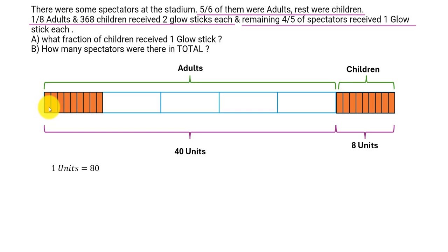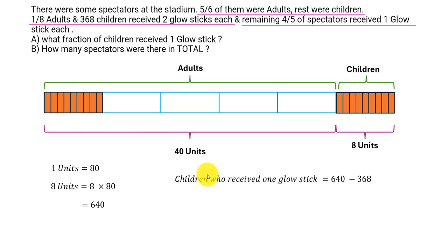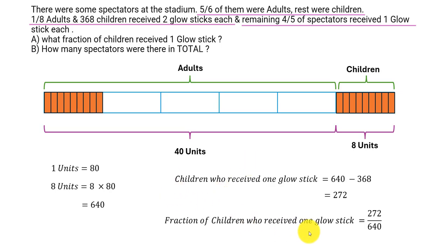So one unit represents 80 people. Now for children — there are 8 units total — so 8 units equals 640 children. We know that 368 children received two glow sticks. So out of 640, the number of children who received one glow stick is 640 minus 368, which is 272. The fraction of children who received one glow stick is 272 out of 640, which on simplification gives us 17 over 40.